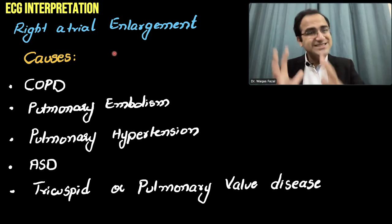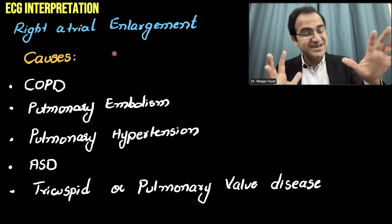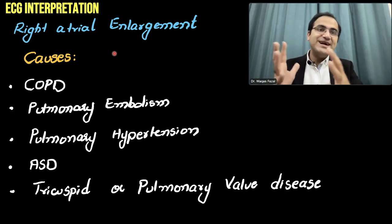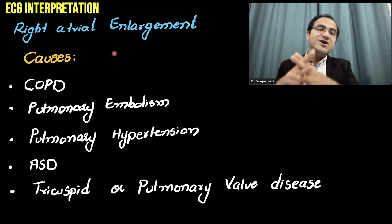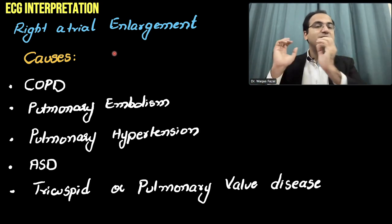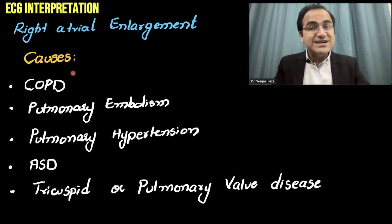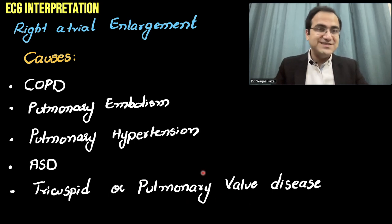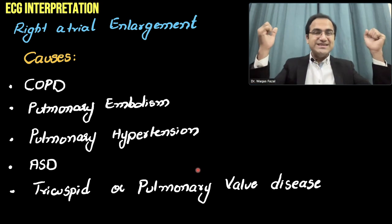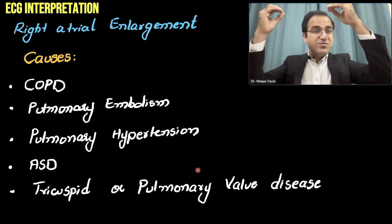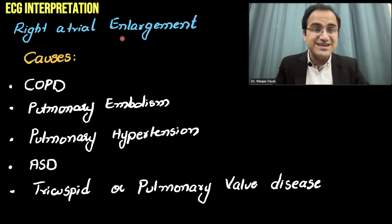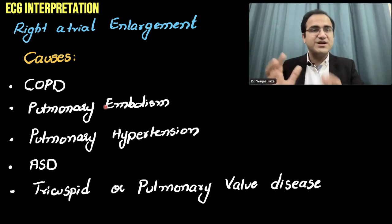Remember, whenever there are changes in the right side of the heart, most likely the causes are in the lungs — COPD, pulmonary embolism, interstitial lung disease. The right heart has to pump blood to the lungs, so when there is a problem in the lungs, there will be a problem on the right side of the heart. Causes of right atrial enlargement include COPD, pulmonary embolism, pulmonary hypertension, ASD (atrial septal defect), and tricuspid or pulmonary valve diseases. Whenever there is pulmonary valve stenosis, the right atrium has to exert more pressure to push blood to the right ventricle. Right atrial enlargement causes are mainly the lungs and valvular conditions.